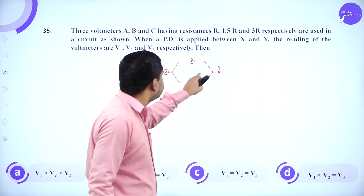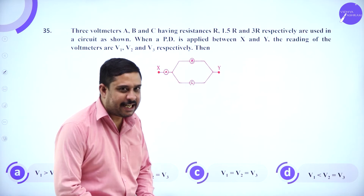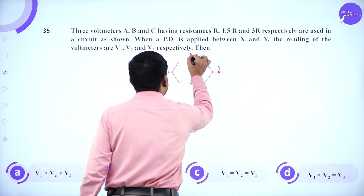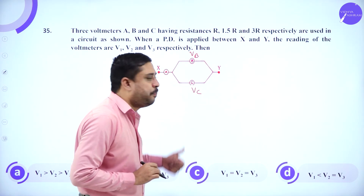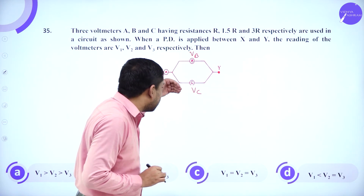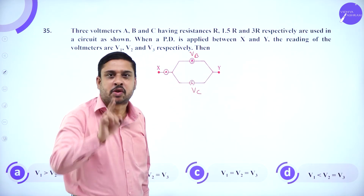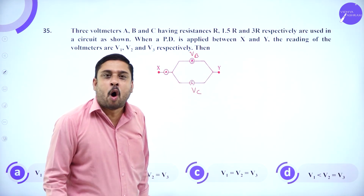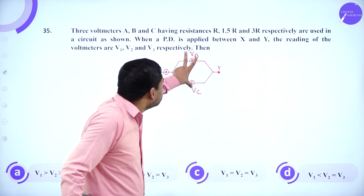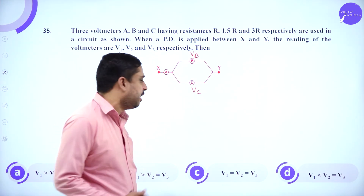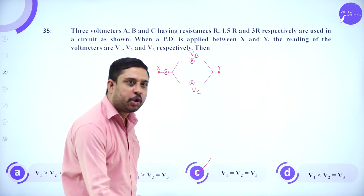Three voltmeters are connected as shown. Voltmeters VB and VC are connected in parallel, so they read the same potential — the output potential of the two terminals. Therefore V1 = V2 = V3.